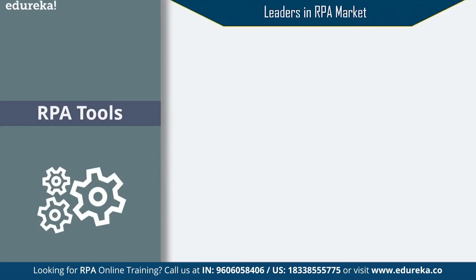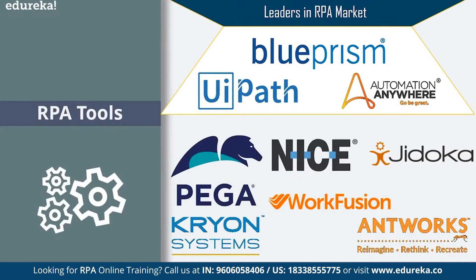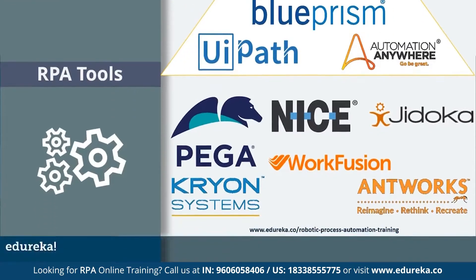Let me quickly tell you the top RPA tools in the market — essentially the RPA leaders. There are various tools available, but the top trending ones are UI Path, Blue Prism, and Automation Anywhere. This could be due to various features they provide such as licensing, trial period, or ease of programming. Apart from these three, there are also other tools available in the market such as Pega, NICE, Kryon, Kofax, WorkFusion, and WorkSmart, among others. There are many robotic process automation tools present in the market, but since our session is mainly focusing on Blue Prism, let's look at what Blue Prism is next.